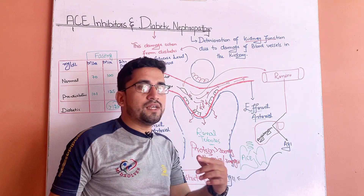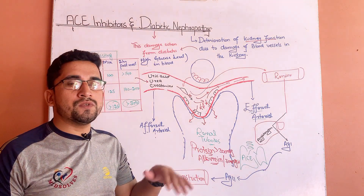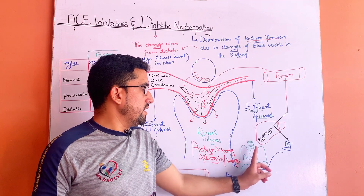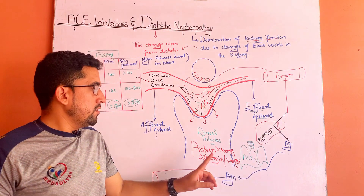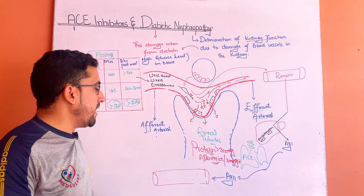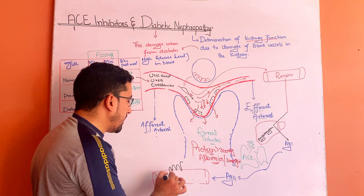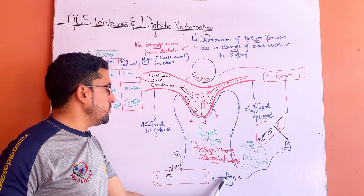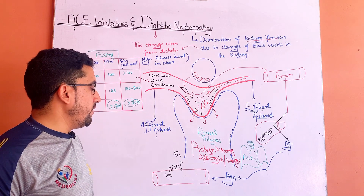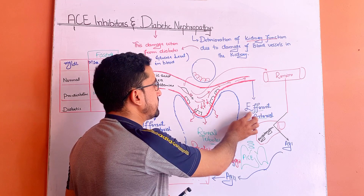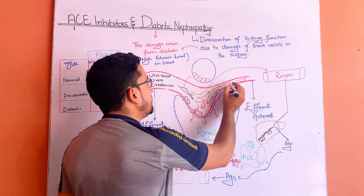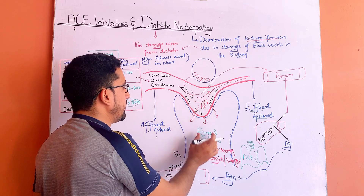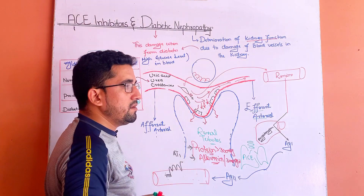This angiotensin-1 is converted by an enzyme present in the endothelial cells of the lungs called angiotensin-converting enzyme. This enzyme, by acting on angiotensin-1, converts it into angiotensin-2, which acts on angiotensin-1 receptors present on different blood vessels. When angiotensin-2 acts on these receptors, it causes vasoconstriction in the efferent arterioles, leading to a further increase in blood pressure and glucose pressure, causing proteins and albumin levels to further increase.